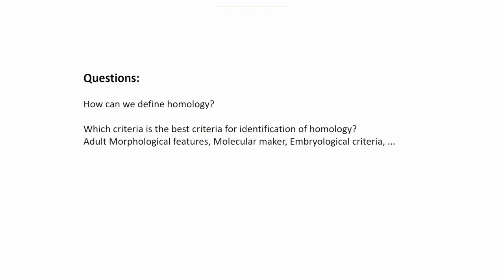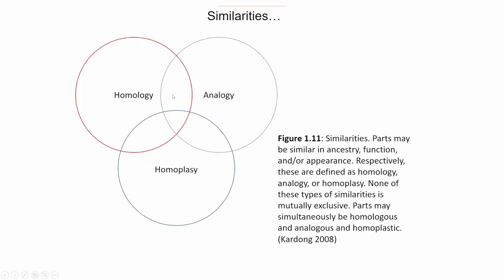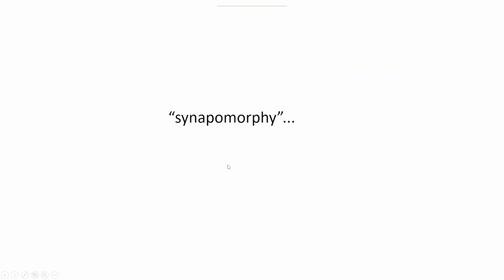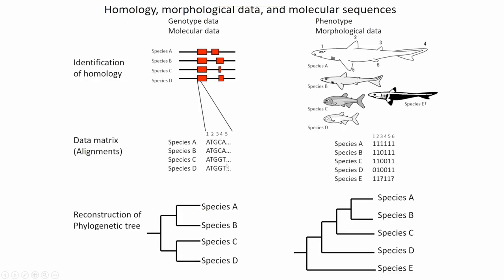You already grasp the concepts of common ancestor, synapomorphic, homology, and homoplasy. Now: how can we identify homology in different species, and which criteria is best? Morphological features, molecular markers, or embryological criteria? We can pick up different criteria to identify homology, but it always causes ambiguity. The Venn diagram here always shows overlapping forms. This is an annoying but important point. Let's compare molecular data and morphological data.